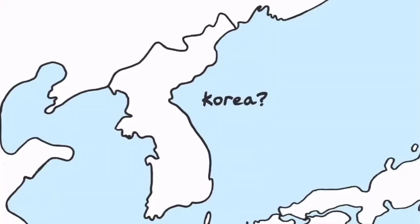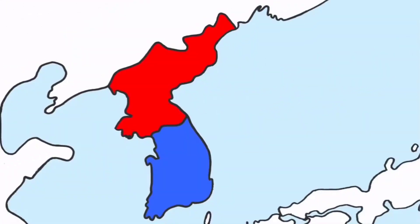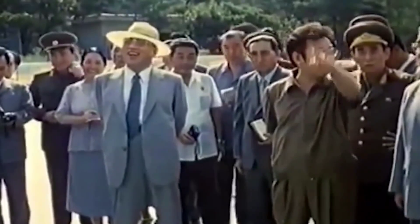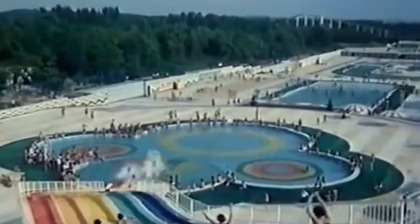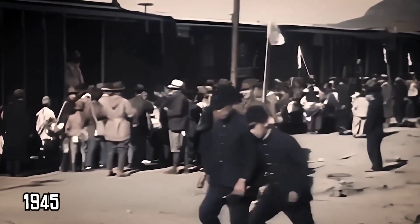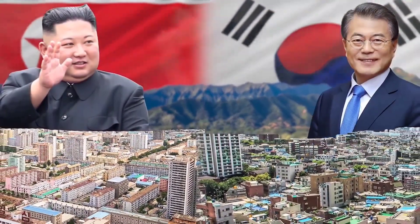There was a time where only one Korea existed. In these simpler times, north and south were just directions on the compass and not two countries that couldn't seem to agree on the tiniest of issues. The demilitarized zone was basically non-existent as the peninsula was unified under a single cultural and political identity — this was until 1945, when suddenly Korea was split into two.